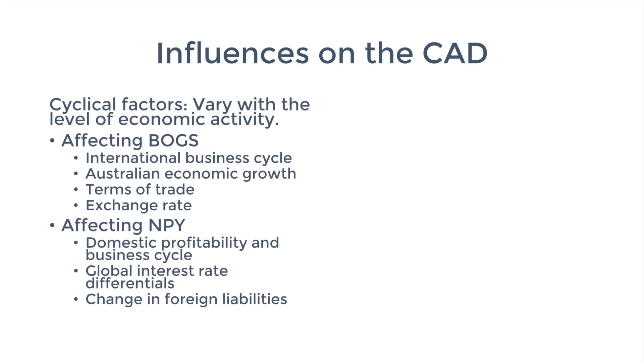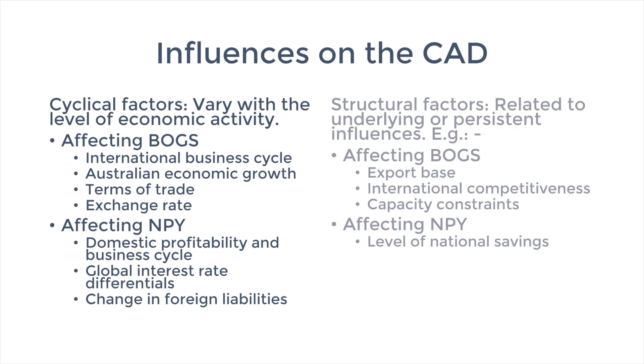To recap, we have covered the influences on BOGS. Cyclical influences include the international business cycle, our own domestic business cycle, the terms of trade, and the exchange rate. Structural factors include a narrow export base and Dutch disease, lack of international competitiveness, and capacity constraints. These are some complex concepts and links, but I hope I've made them easier to understand — that is my aim here at Economics Made Easy. If this video has helped you, hit the like and subscribe buttons, leave a comment, and share the video. Next time we'll be covering the influences on NPY, and you don't want to miss that.